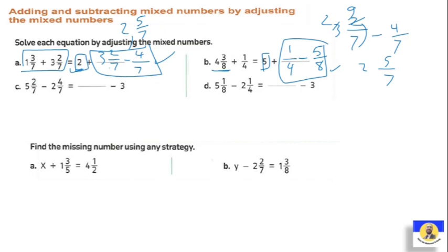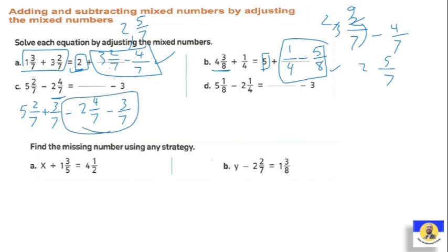Letter c: five and two over seven minus two and four over seven equals some number minus three. For the number to be three, we must have added three over seven to both sides. So five and two over seven plus three over seven, minus two and four over seven minus three over seven. That gives three. And five and two over seven plus three over seven becomes five and five over seven.